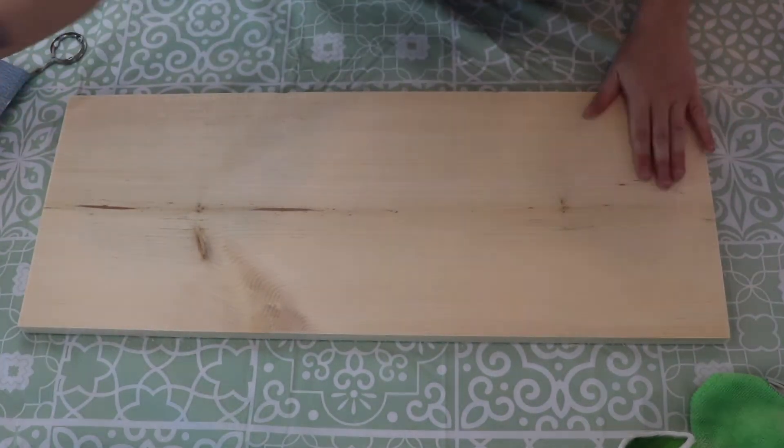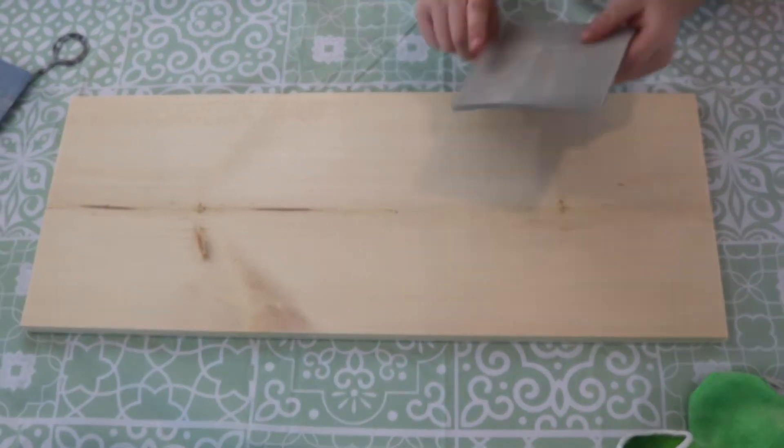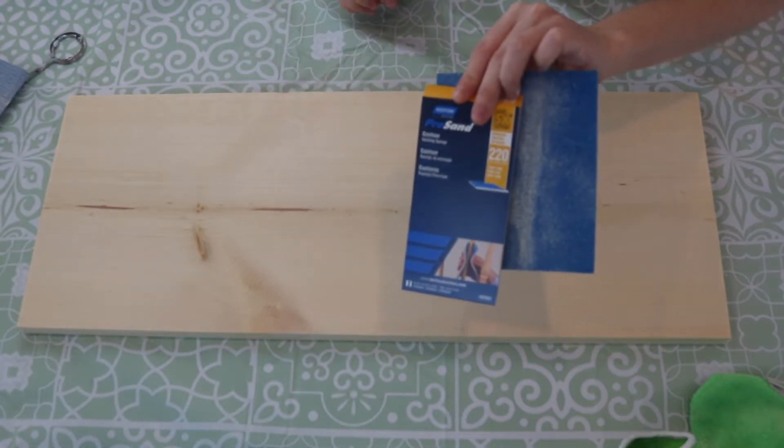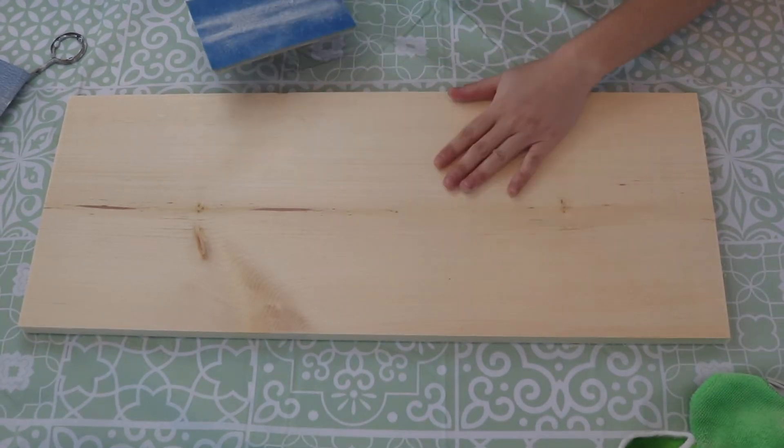What I like to do is lastly take a 220 grit contour sponge and finish off the wood like this.